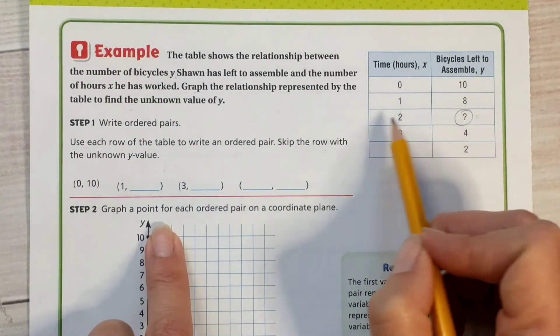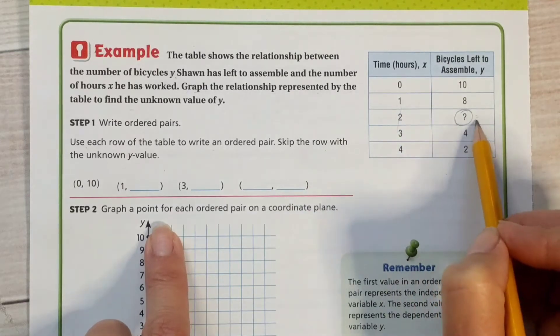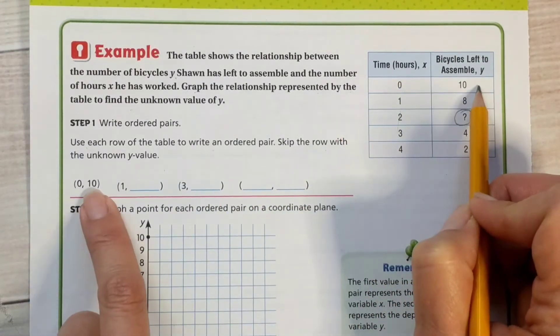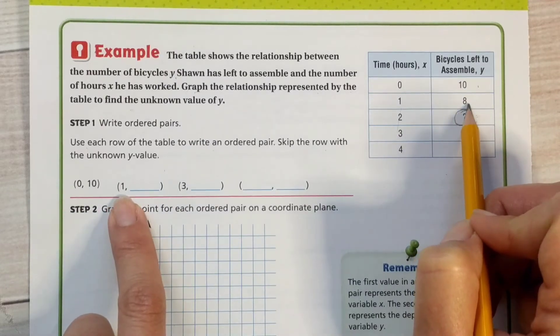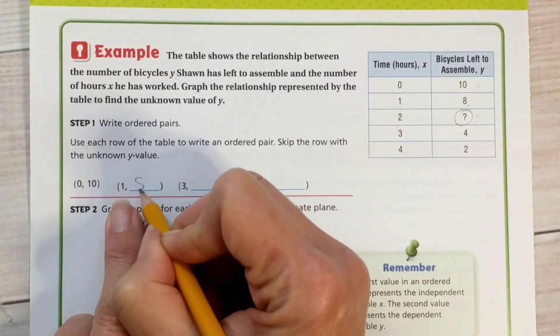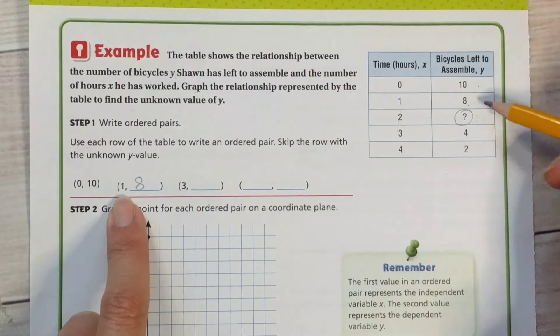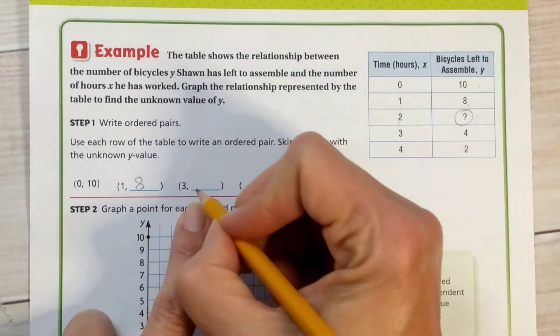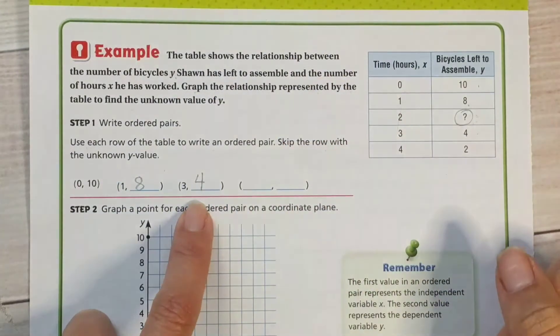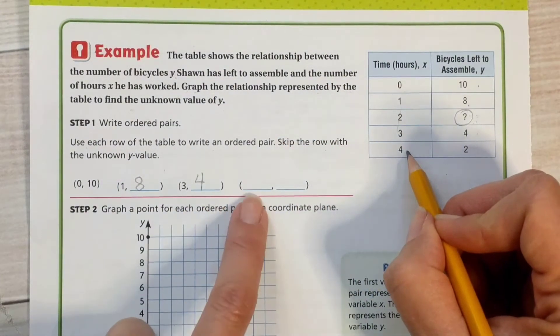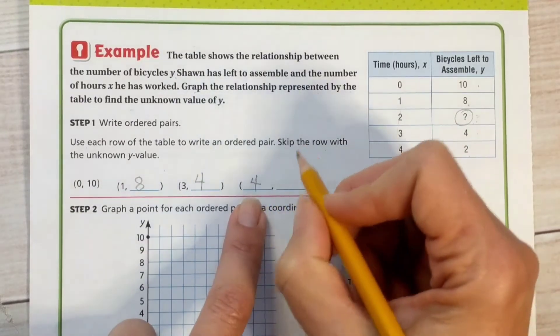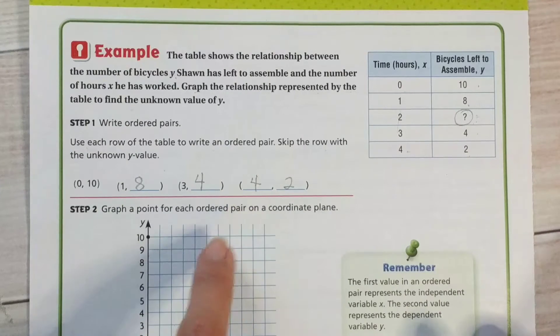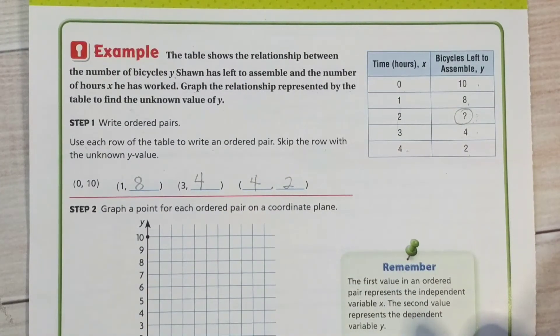So they don't want us to use this row because we don't know the y value yet. So we have 0, 10. We have 1, 8. So in an hour he's assembled two of the bikes, so now he's down to only eight bikes that he needs to assemble. We're skipping this row. 3, 4, so he only has four bikes left after three hours. And 4, 2 is my last ordered pair. So at four hours he only has two bikes left. Okay, we're going to go ahead and graph what we have and find the missing value.